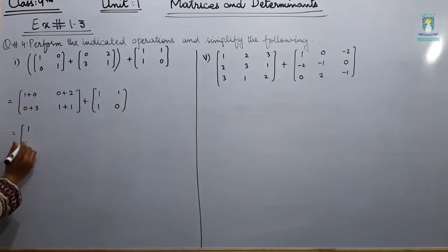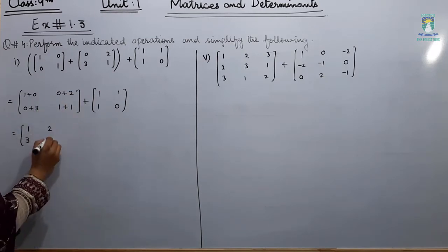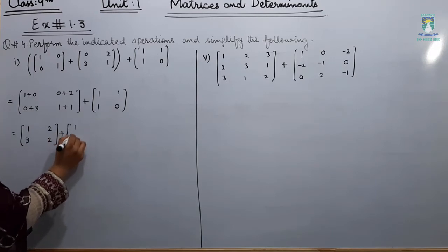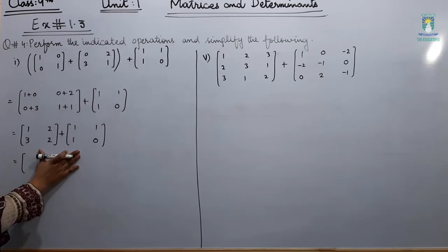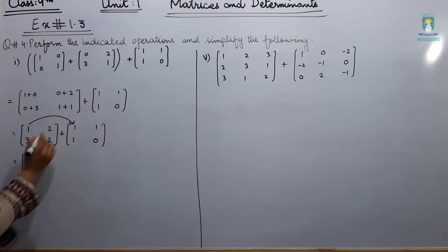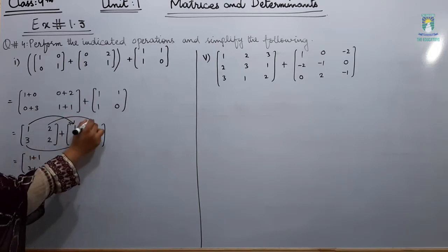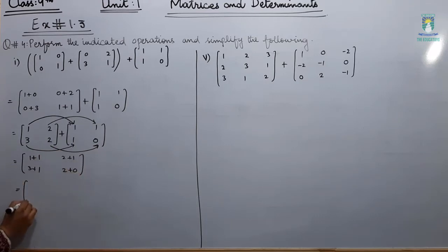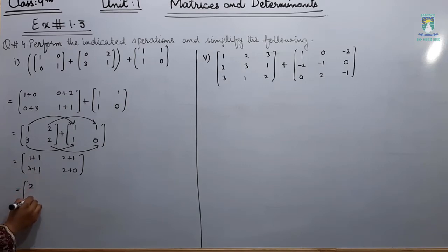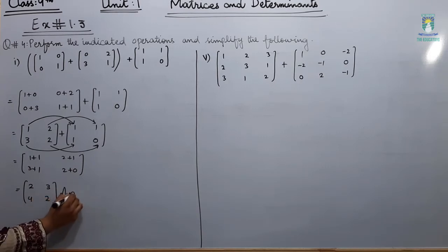Now: 1 plus 0 is 1, 0 plus 3 is 3, 0 plus 2 is 2, 1 plus 1 is 2. So we have [1, 3; 2, 2] plus [1, 1; 1, 0]. Now add these matrices: 1 plus 1 is 2, 3 plus 1 is 4, 2 plus 1 is 3, 2 plus 0 is 2. This is your answer: [2, 4; 3, 2].